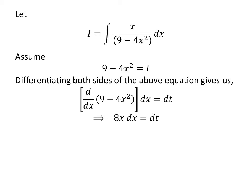We know the derivative of 9 minus 4x squared is equal to minus 8x. So minus 8x dx equals dt.